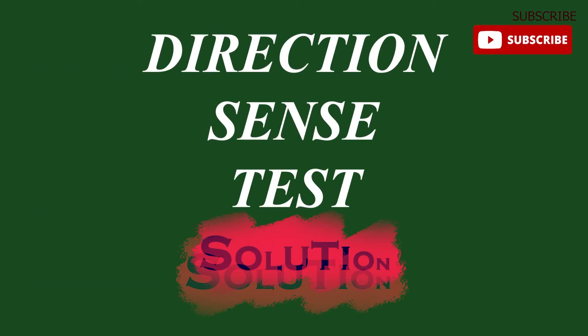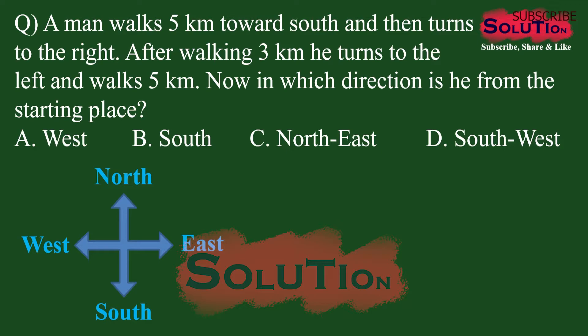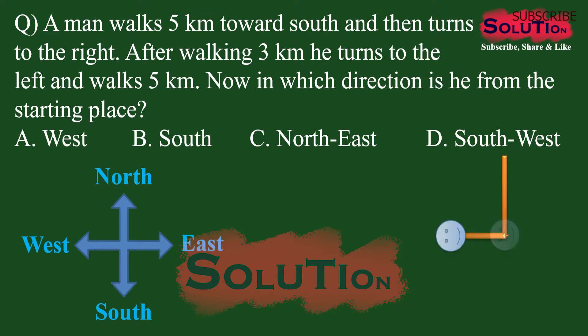Now let us understand direction sense testing. First let us draw the directions: east, west, north, south. A man walks five kilometers towards south, then turns right — which means he is now pointing towards west — and moves three kilometers. Then he turns to the left.